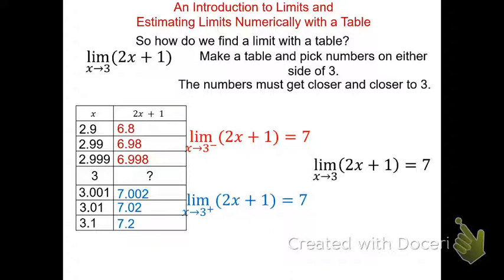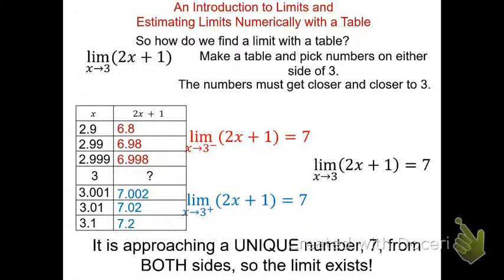Because the limit from the left and the limit from the right are both approaching the same unique number — 7 — the limit is said to exist. It has to be a specific number, the same from both sides. Now let's look at some more examples where the tables are already complete, and figure out what the limits are using this definition.